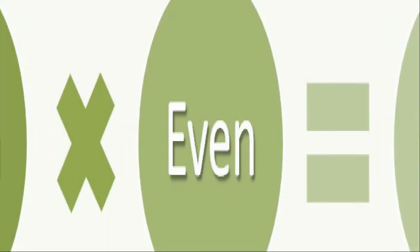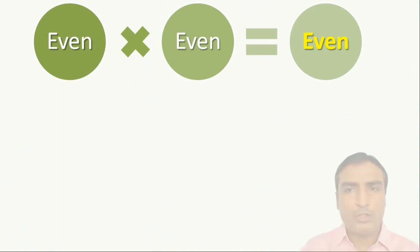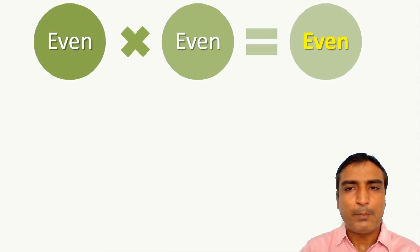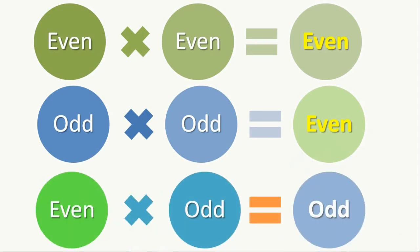Let us now consider the product of two even signals. The product of two even signals will be an even signal. On the other hand, the product of two odd signals will also be an even signal. However, the product of an even signal and an odd signal results in an odd signal.